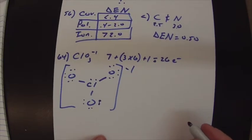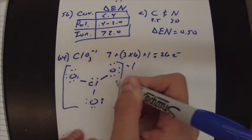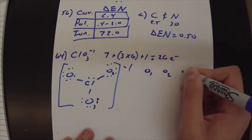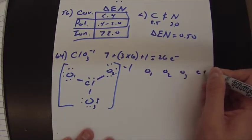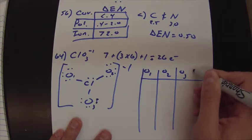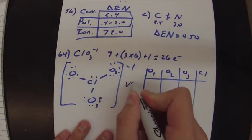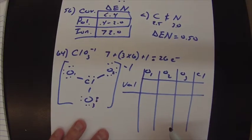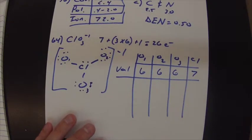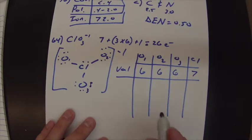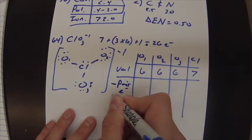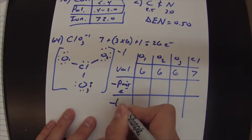Now let's do formal charges. Let's just call this oxygen 1, oxygen 2, and oxygen 3. So we have oxygen 1, oxygen 2, oxygen 3, and our chlorine. I like to make a little table. You obviously can do whatever you want. So valence electrons, how many valence electrons do they have? Well, all the oxygens have 6, and chlorine has 7. You just look at a periodic table and figure that out. And so remember, it's valence electrons minus paired electrons minus bonds.